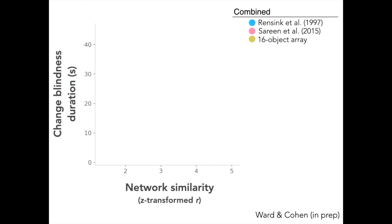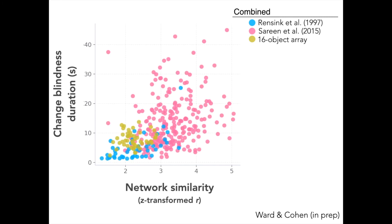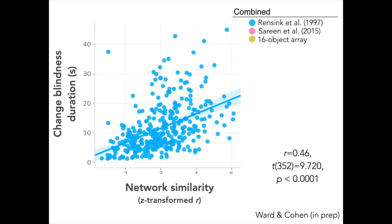Combining across the different stimulus sets, but still plotting network similarity predicting change blindness duration, we find a distribution that follows the same as our hypotheses. The idea being that the more similar representations are in the network, the longer people take. There's obviously differences among stimulus sets here, but collapsing across these is a very strong positive trend. So what this shows is that overall, network representation similarity predicts change blindness in people.